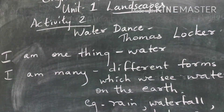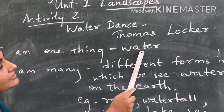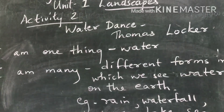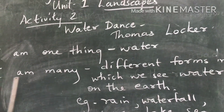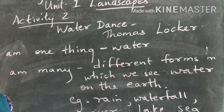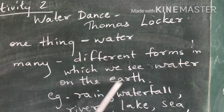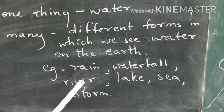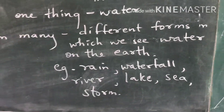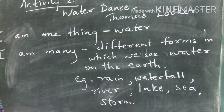The poem begins with 'I am one thing.' Here the poet is talking about water. 'Others say I am many' — 'I am many' means the different forms in which we see water on the earth. Water is one thing but present on the earth in different forms like rain, waterfall, river, lake, and sea.